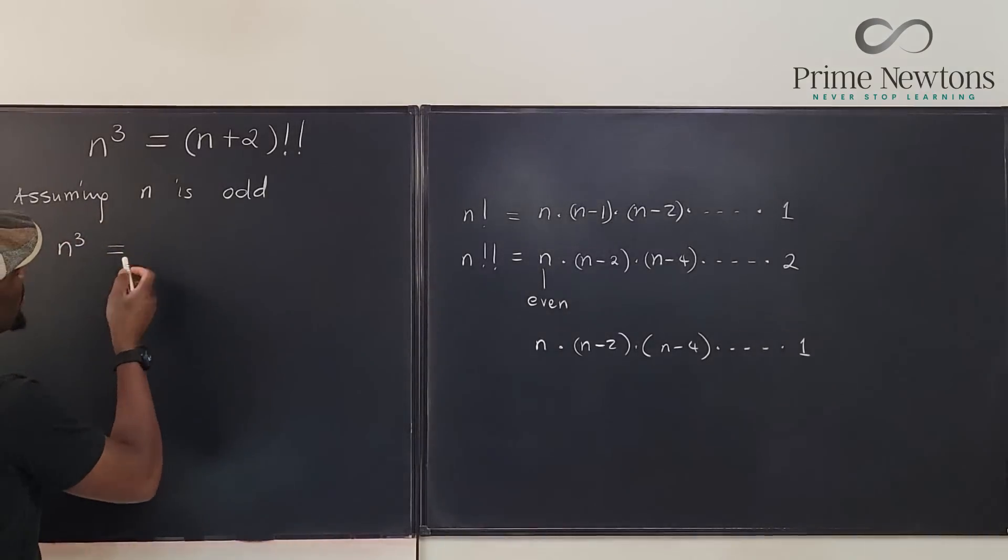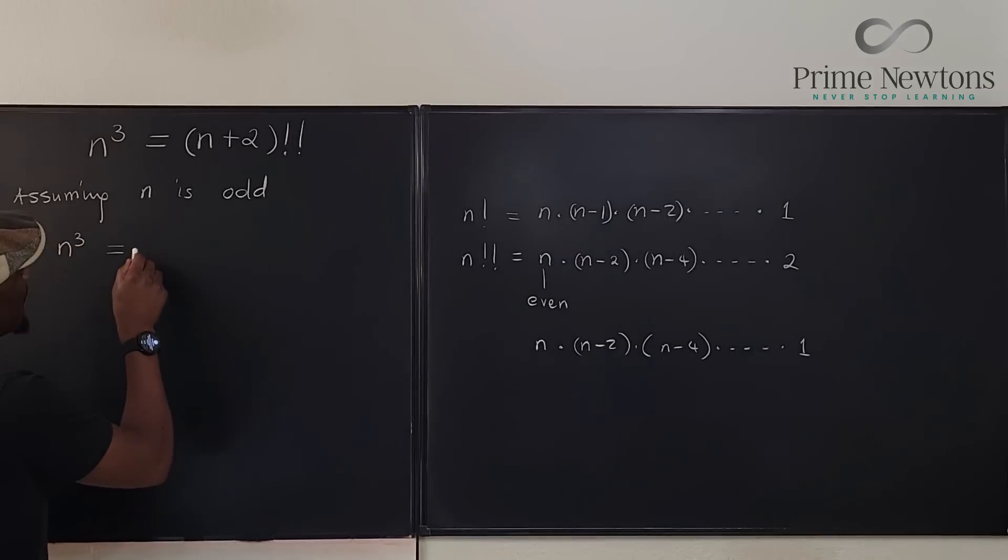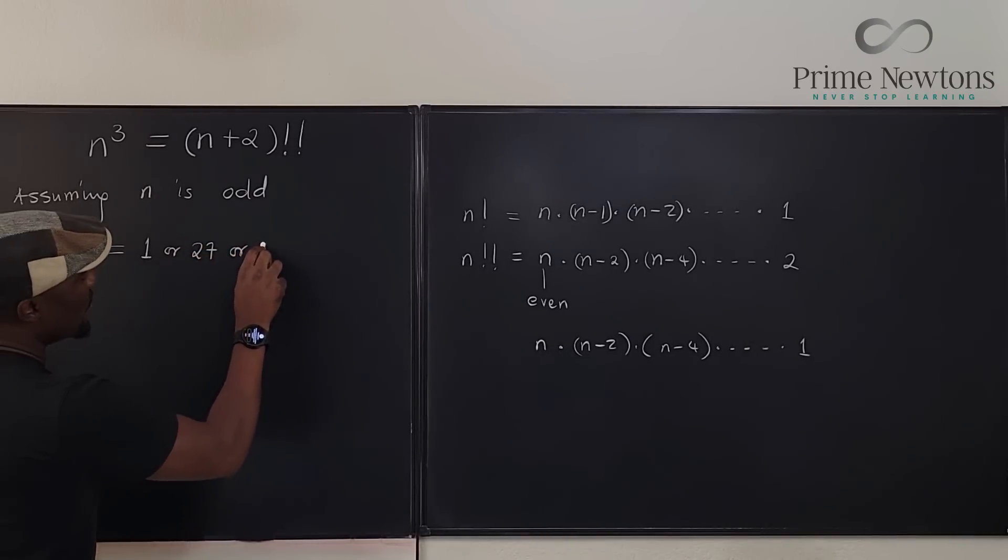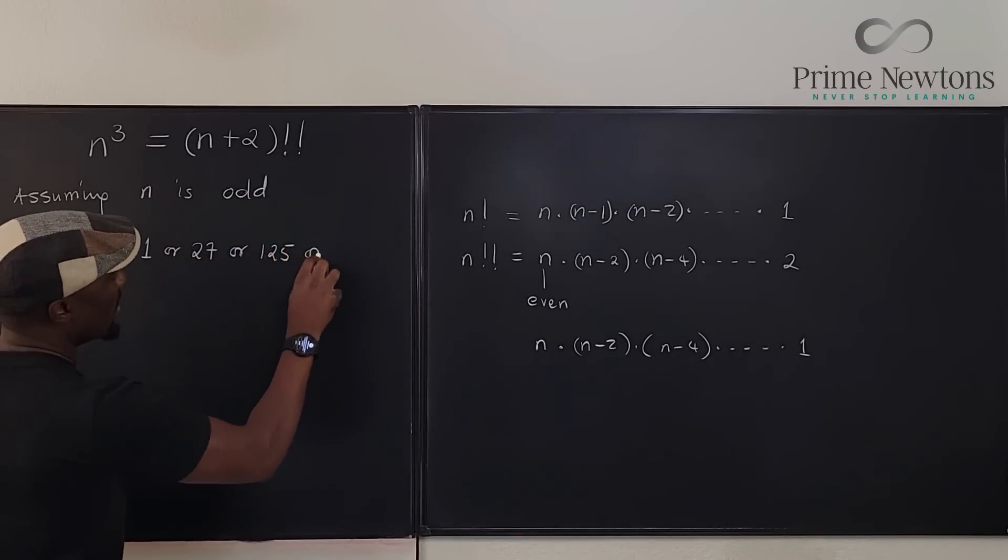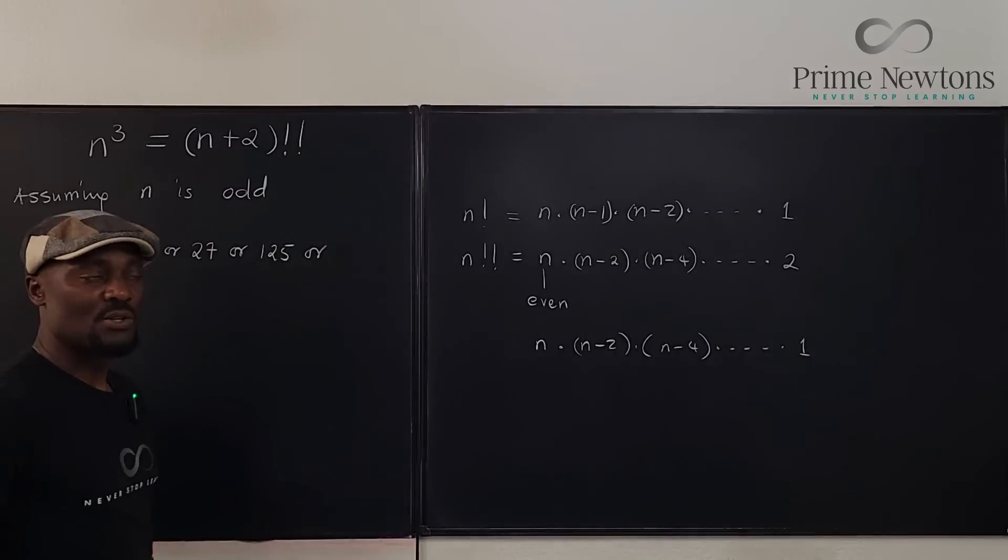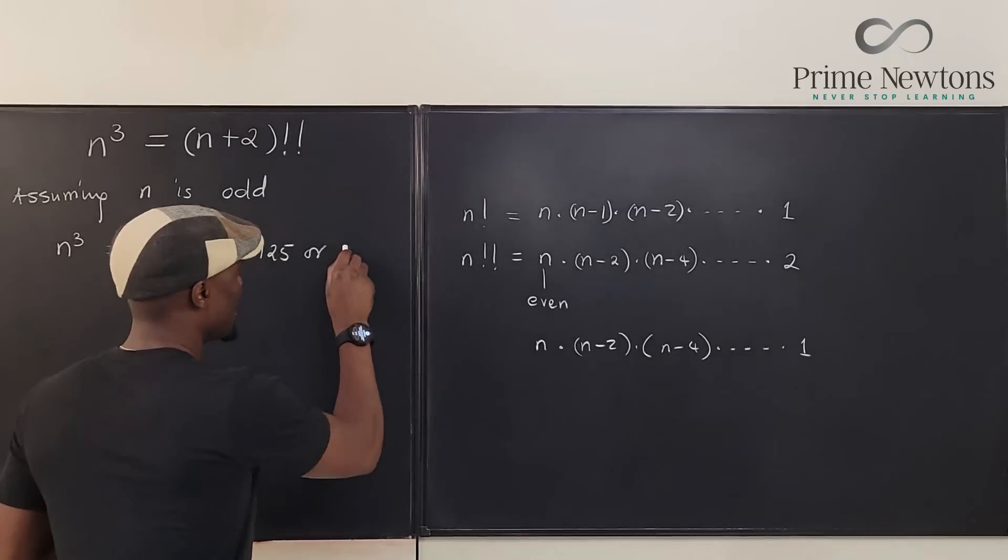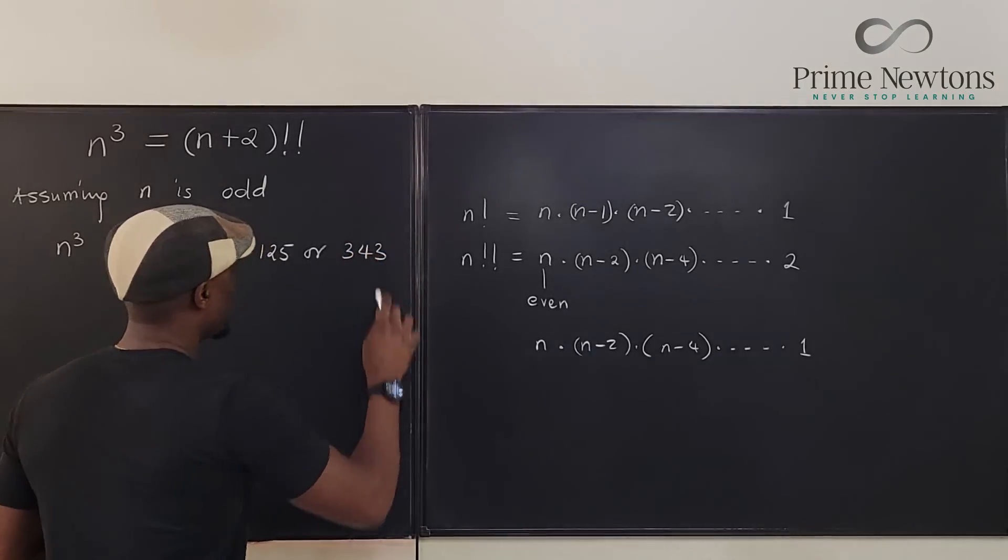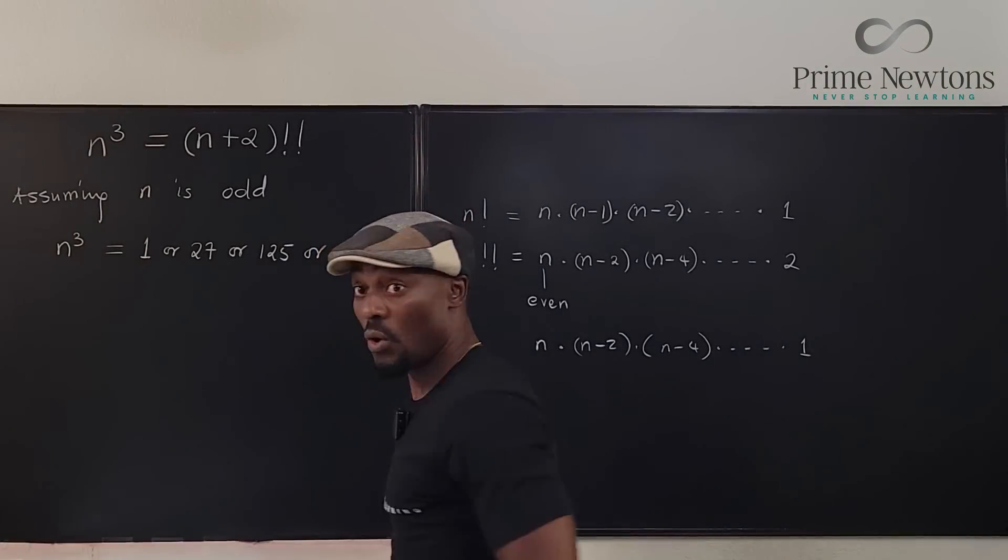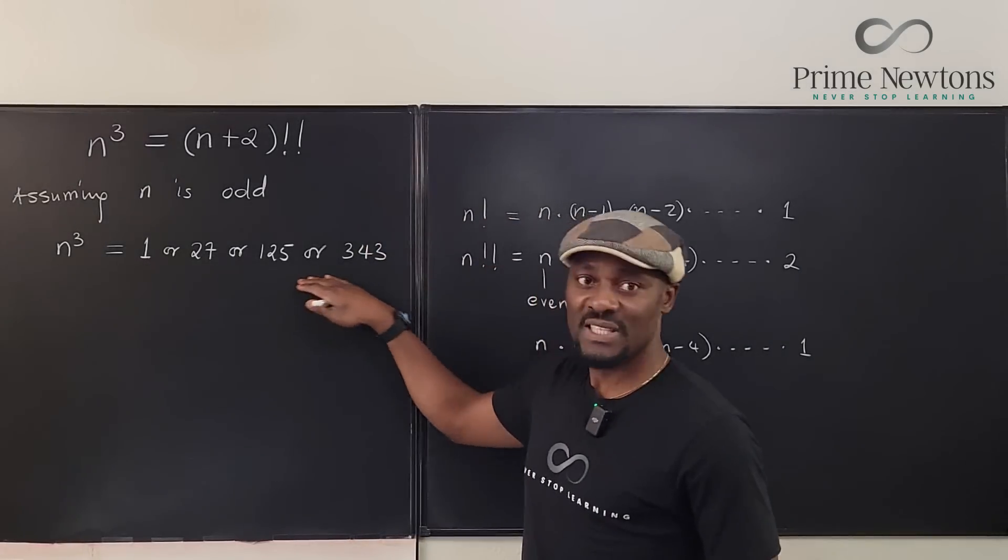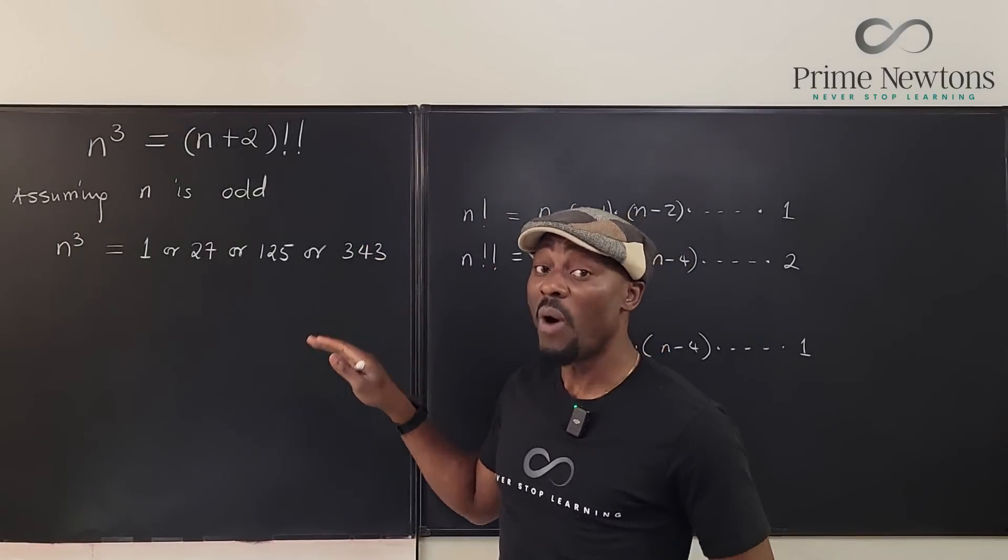And what are they? So n cubed will be equal to 1 or 27 or 125 or what is 7 cubed? 7 times 7 is 49. 9 times 7 is going to be 343. Okay, 343. Okay, now these are the first four odd perfect cubes. Your answer has to be one of these and not more than it. Why?